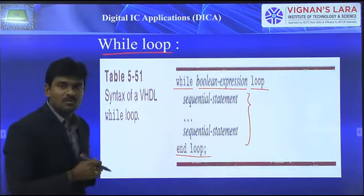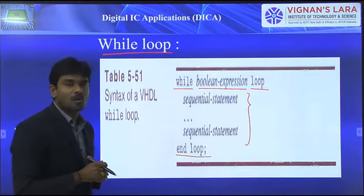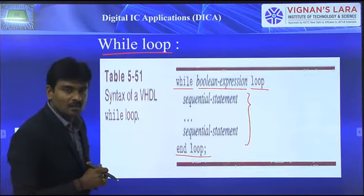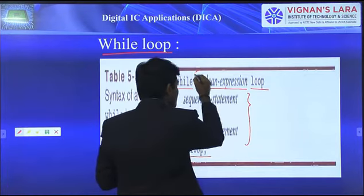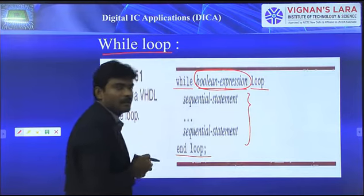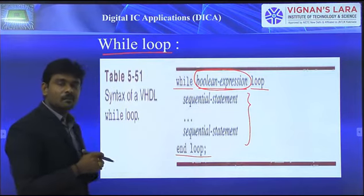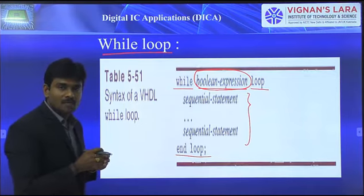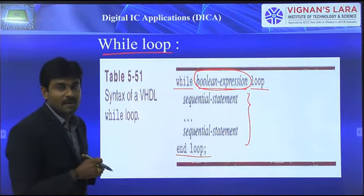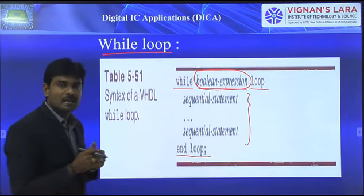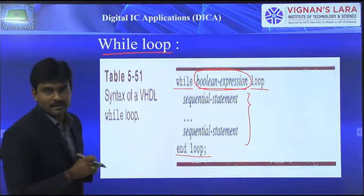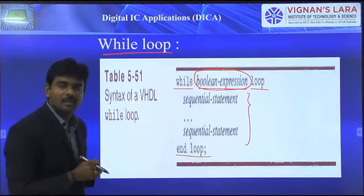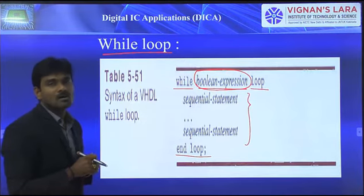The while loop is a sequential statement, so we can use it within a process. How it executes: first it verifies the boolean expression. A boolean expression combines boolean terms using VHDL predefined boolean operators such as AND, OR, NOT, etc.